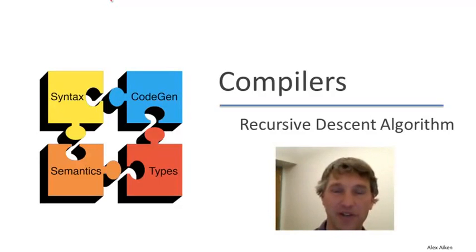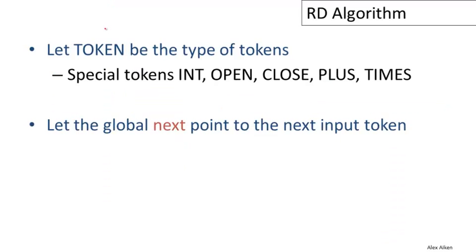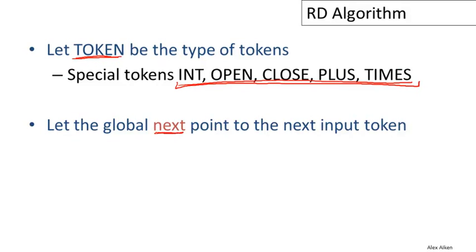Welcome back. In this video, I'm going to outline a general algorithm for recursive descent parsing. Before I dive into the details, let me define a couple of small things we'll use throughout. Token is going to be a type, and the particular tokens we'll use in the example are things like int, open paren, close paren, plus, and times. We're also going to need a global variable called next that points to the next token in the input stream — it plays the same role as the big arrow we used in the previous video to indicate our current position.